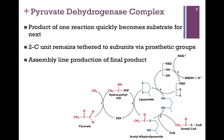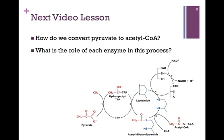You can think of it as kind of an assembly line production to get to our final product. In our next video lesson, we will look in detail at this transition step and see how we convert pyruvate to acetyl-CoA, and we will look at the role of each of the enzymes and cofactors in this process.